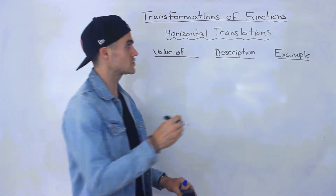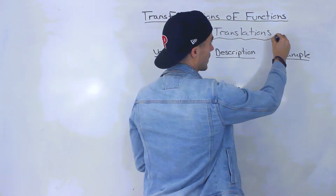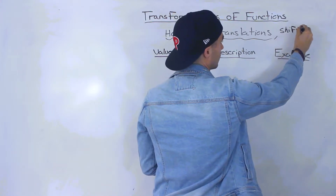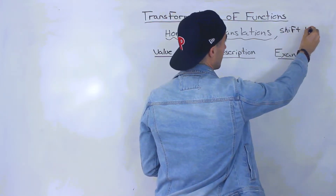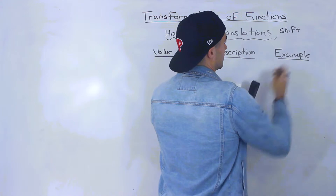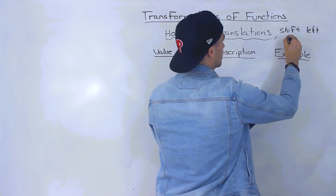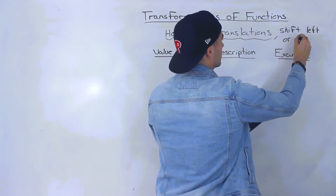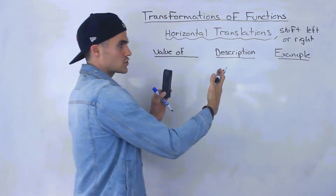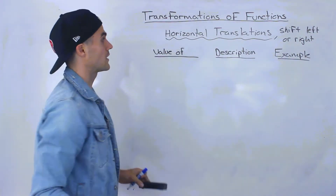Whenever you see horizontal translations, another way to describe that is if we take a function and we shift it left or right. So we're going to be taking a function and translating it side to side, left or right.